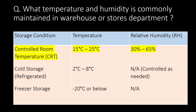What temperature and humidity is commonly maintained in the warehouse or stores department? For controlled room temperature storage, the temperature range is 15 to 25°C and relative humidity is 30% to 65%. For cold storage, 2 to 8°C is maintained, and for freezer storage, minus 20°C or below.